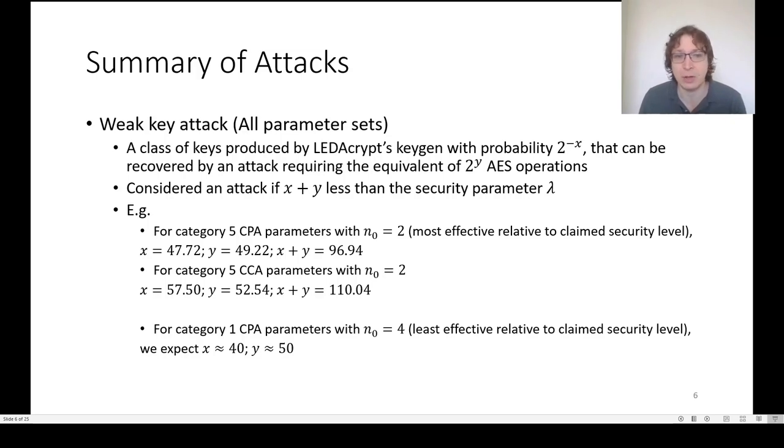We can also apply this attack in settings that are less advantageous. Probably the worst setting is where the security level claimed is quite low, category 1, and where N0 is chosen to be the largest value, 4. But even there, we expect to have X plus Y something like 90, which is less than the claimed security level of 128.